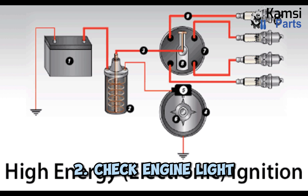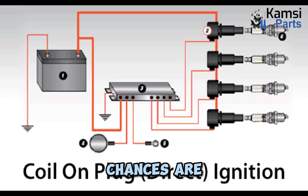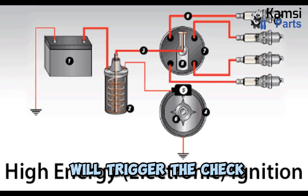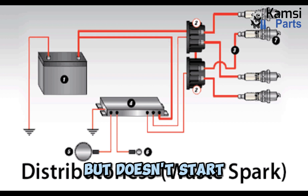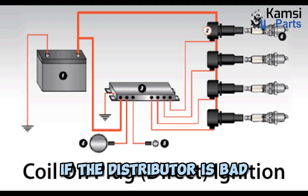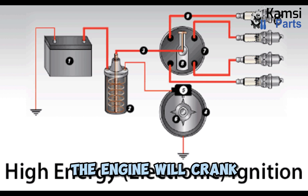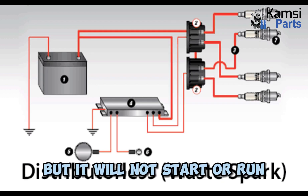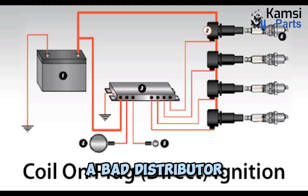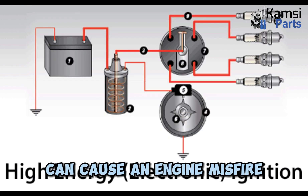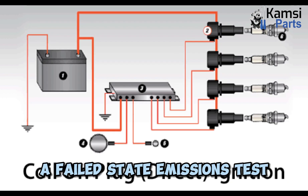Check engine light: if your vehicle was made within the last few decades, chances are a problem with the distributor will trigger the check engine light. Engine cranks but doesn't start: if the distributor is bad, the engine may not get the spark it needs. As a result, the engine will crank but it will not start or run. Increased emissions: a bad distributor can cause an engine misfire that can lead to an increase in emissions and potentially a failed state emissions test.